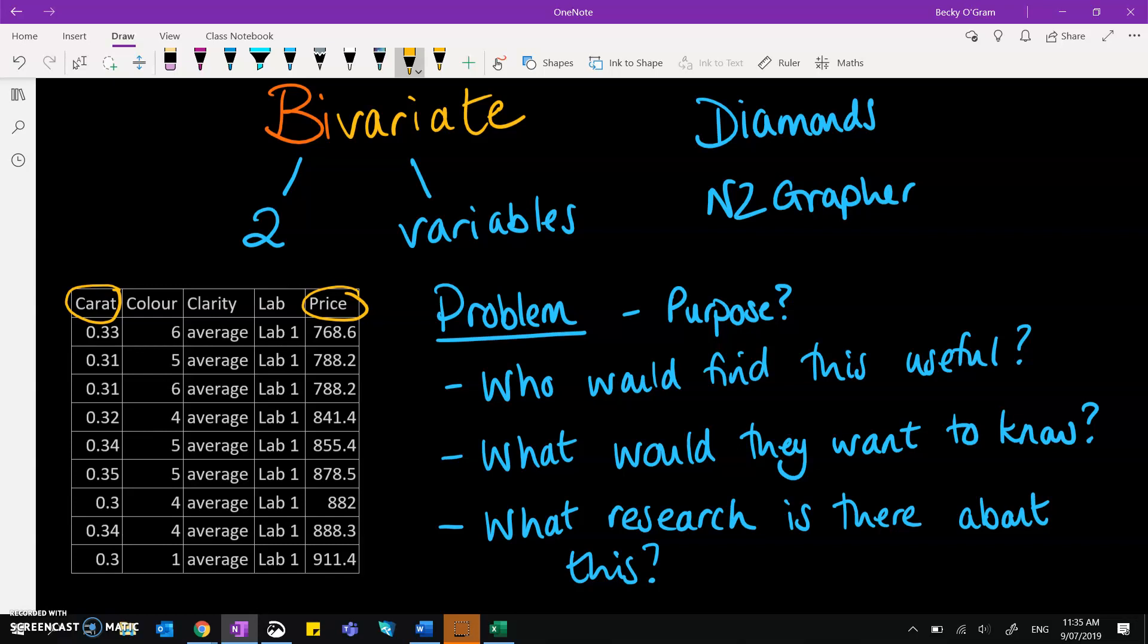Now who might find this useful? Well, this could be useful to diamond retailers or perhaps valuers, or possibly just somebody looking into buying a diamond to figure out what sort of price they're looking at dependent on the weight of that diamond. So they might want to know what that relationship is between carat and price, and I would go into research if there is anything out there already to suggest that there is a relationship between the two and what that might be.